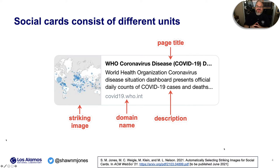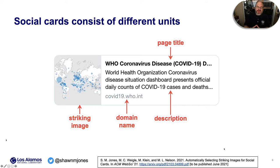In this particular example, the page title tells us we're going to get a page about COVID-19 from the WHO. In the description, we can see there's a disease situation dashboard. If we had some doubt as to whether this content was legitimate, we could look at the domain name, which tells us it comes from who.int. And finally, we have the striking image, which is not merely decorative — it's another way to convey a summary of the underlying content. In this case, we have a picture of a map with circles of different sizes in different countries, indicating COVID-19 cases.